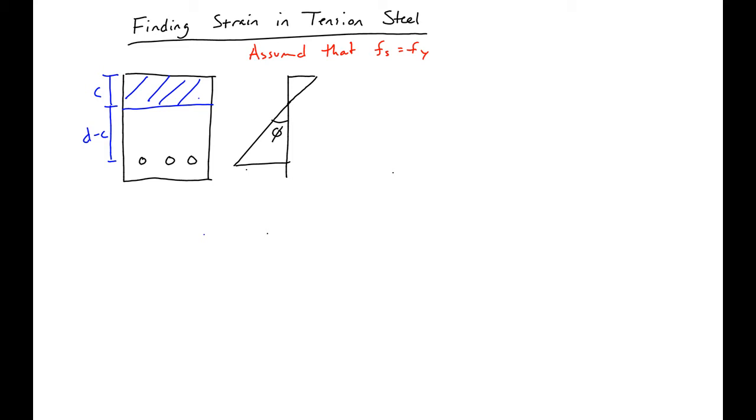We'll have our curvature. We'll have a strain of 0.003 at the topmost compressive fiber, and we'll have our steel strain down in the bottom.